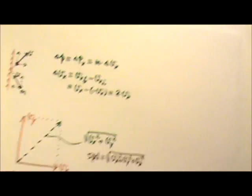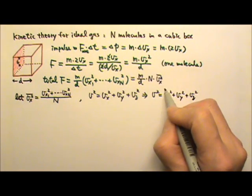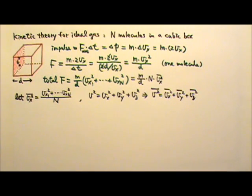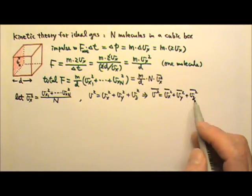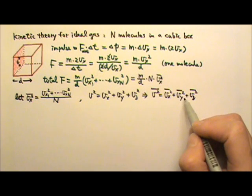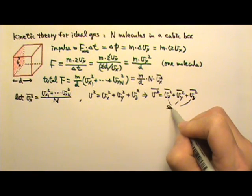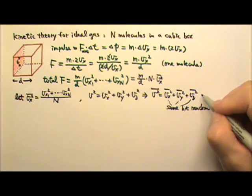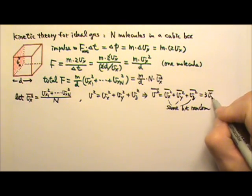If I square both sides, speed squared equals vx squared plus vy squared plus vz squared. And if I take the average, I can take the average of each term to get the average of speed squared. Because the motion of the molecules is completely random, the motion should not favor any side. Which means the average of vx squared, the average of vy squared, and the average of vz squared should all be equal. So the average speed squared equals three times the average of vx squared.